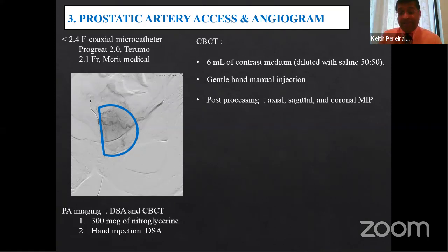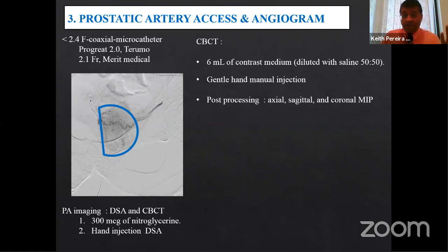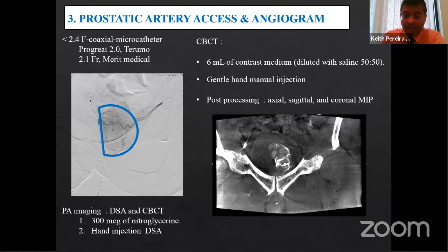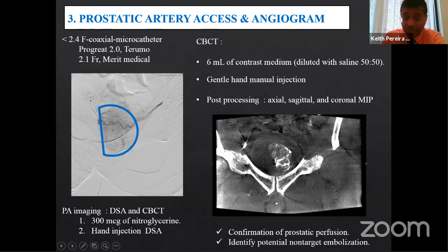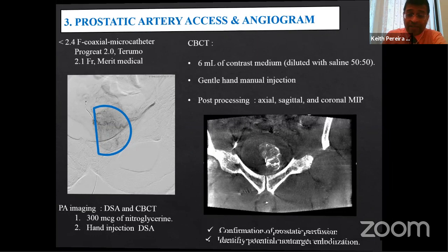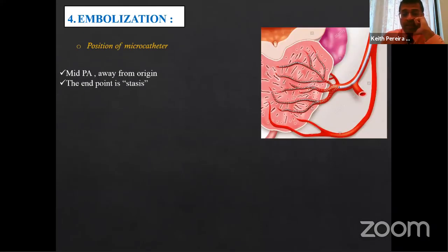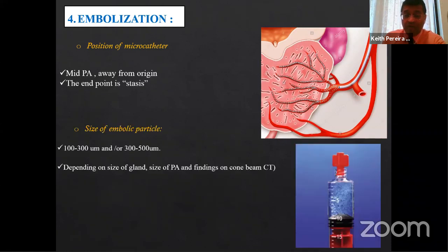The main aim of cone-beam CT is to confirm prostatic perfusion — you want to see the prostate is being perfused, not the bladder — and to identify potential non-target embolization to structures like the middle rectal or pudendal arteries. For embolization, position the microcatheter in the mid-prostatic artery away from the origin. The endpoint is complete stasis — unlike UFE where you do 'five-beat stasis,' here you want complete stasis to maximize ischemia.